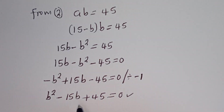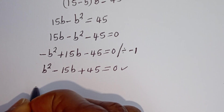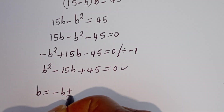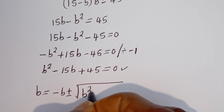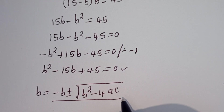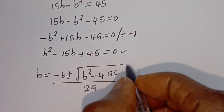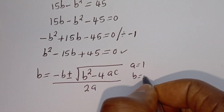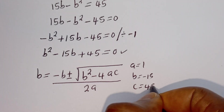This is a quadratic equation — let's solve this using the quadratic general formula: B equals negative b plus or minus square root of b squared minus 4ac, over 2a. From this equation, a is equal to 1, b is equal to minus 15, and c is equal to 45.